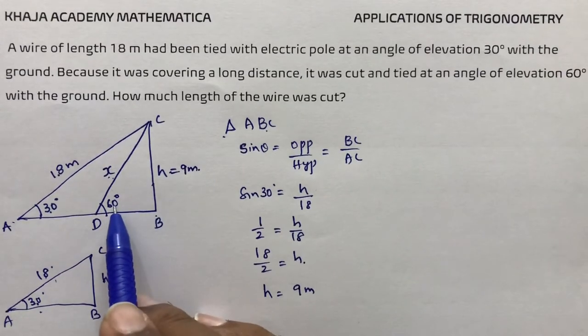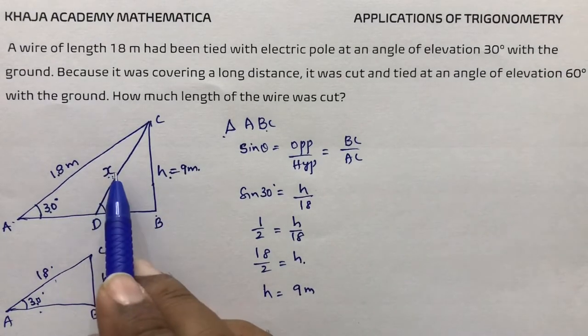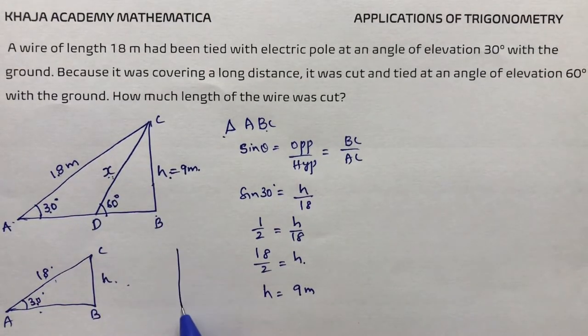Now use this height to find x. You can draw triangle DBC where the angle is 60 degrees. You have H equals 9, now calculate x.